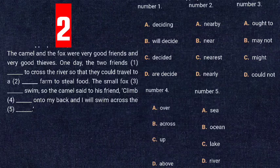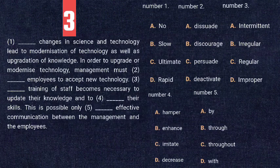For blank number four — 'climb [blank] onto my back' — 'climb up' is the correct phrase, so option C, 'up,' is correct. For blank number five — 'I will swim across the [blank]' — the options are ocean, lake, and river. Since the passage already mentions 'cross the river,' option D, 'river,' is correct: 'climb up onto my back and I will swim across the river.'